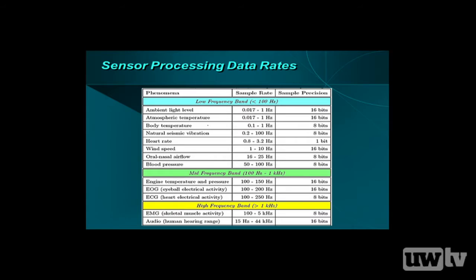That's where we're going to go — sensor processing, where you're not full duty cycle, you have very high energy constraints, maybe scavenging, ultra-low voltage, or a small battery, and computational loads are not exceedingly difficult. Here are some target applications and their sample rates: ambient light level at about 1 Hz, 16 bits; atmospheric temperature; all the way up to heart rate and wind speed at 100 Hz, 8 bits; eyeball electric activity and heart activity in the hundreds of hertz. Even at the highest rate like audio, you're still at just thousands of hertz with 16 bits — pretty low computation.